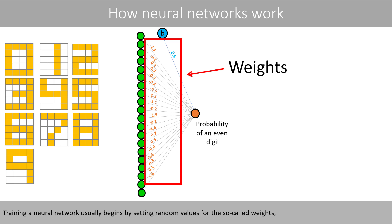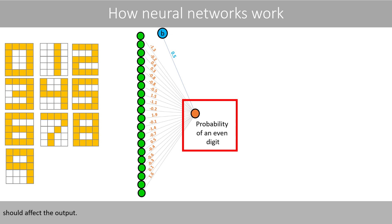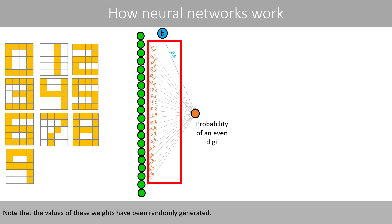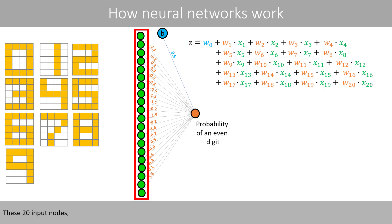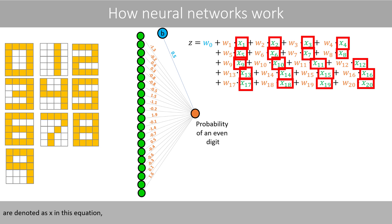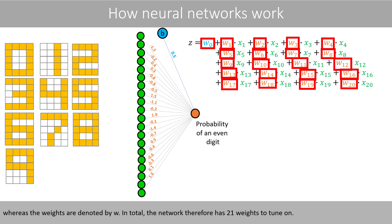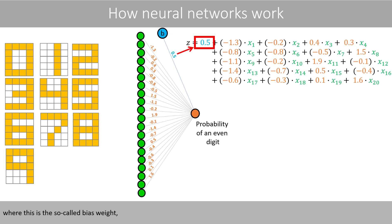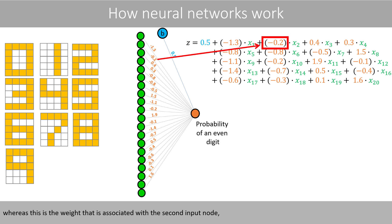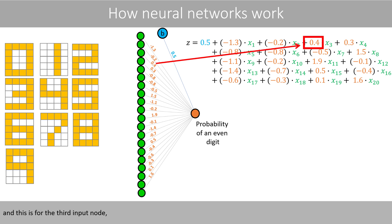Training a neural network usually begins by setting random values for the so-called weights that determine how the input signals should affect the output. These 20 input nodes are denoted as x in this equation, whereas the weights are denoted by w. In total, the network therefore has 21 weights to tune. The bias weight is included, along with the weight associated with each input node — first, second, third, and so forth.